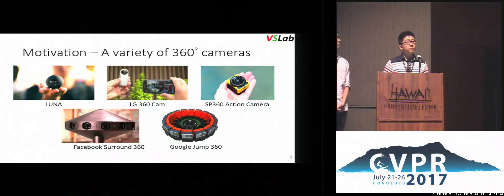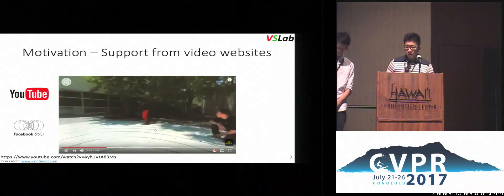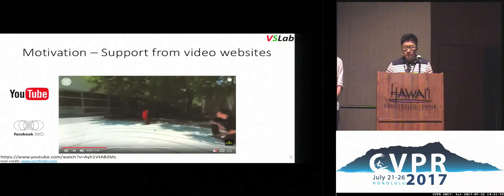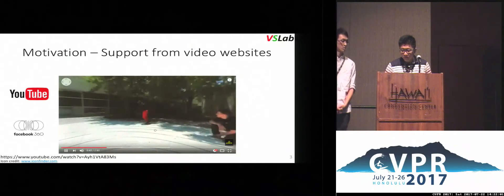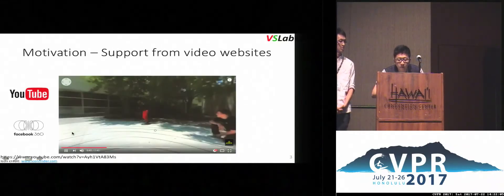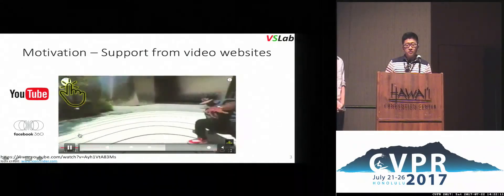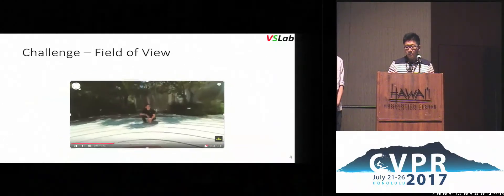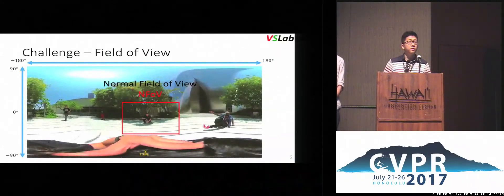Thanks to a rising number of 360-degree cameras, we can now capture 360-degree video very easily. YouTube and Facebook are streaming those videos so we can interactively select different viewing angles in a normal field of view. However, manually selecting the viewing angles is very challenging because we totally ignore the valuable information in the panoramic view, as shown in this image.